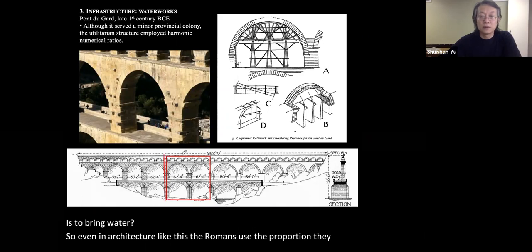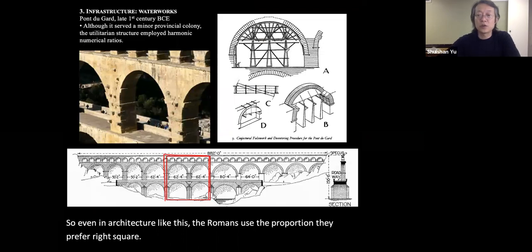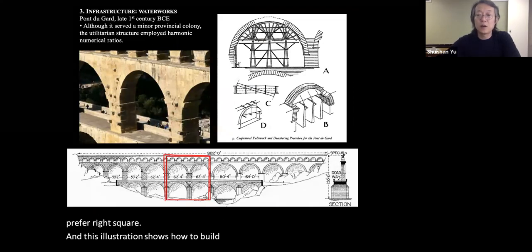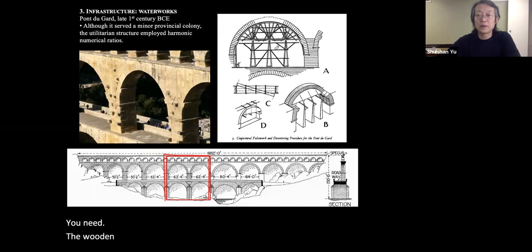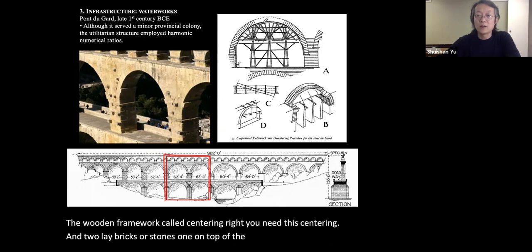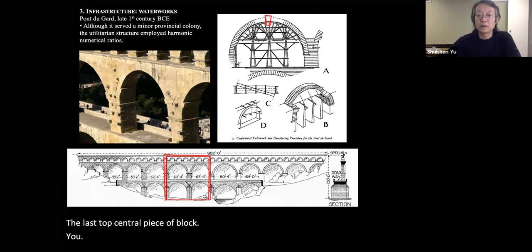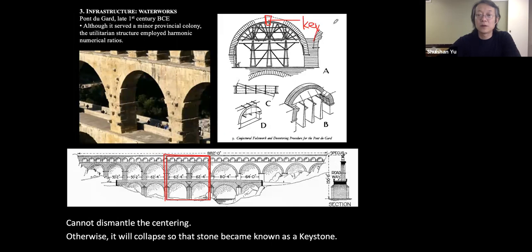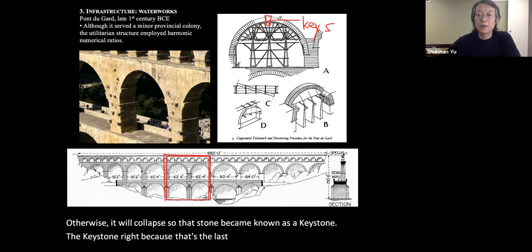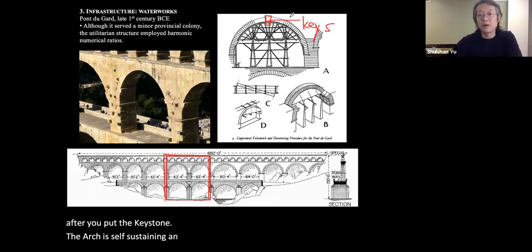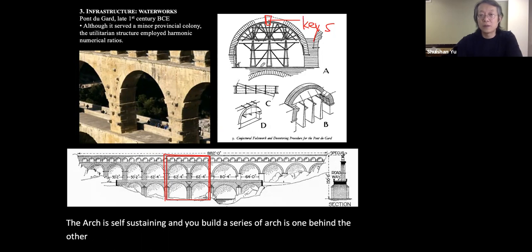Even in architecture like the aqueduct, the Romans used their preferred proportions — the square. To build an arch, you need a wooden framework called a centering. You lay bricks or stones one on top of the other until you lay the last, top central piece — which cannot be removed from the centering until this piece is placed, otherwise it will collapse. That stone became known as the keystone. After placing the keystone, the arch is self-sustaining. Building a series of arches one behind the other creates a barrel vault.